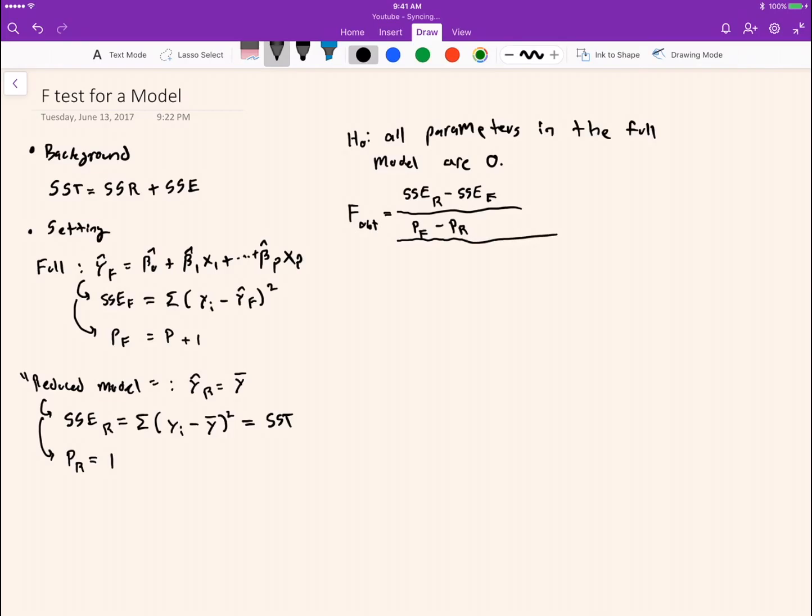And relative to the sum of the squares error for the full model, which is the number of observations minus the number of parameters in the full model.